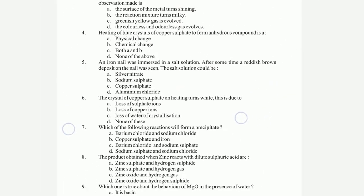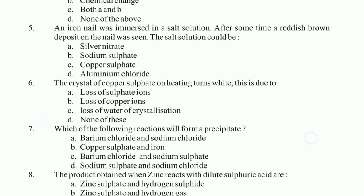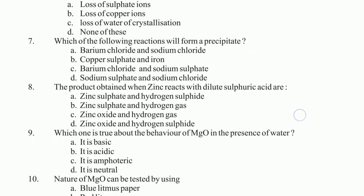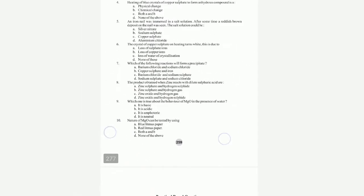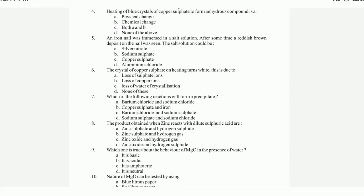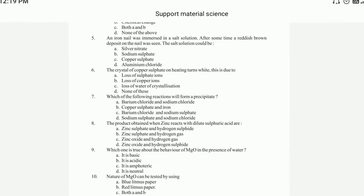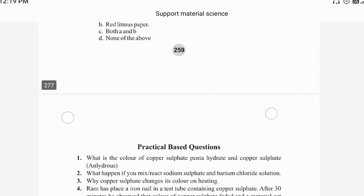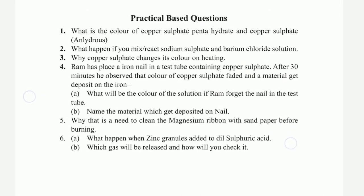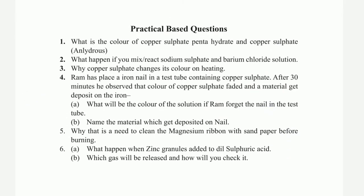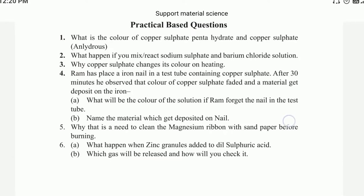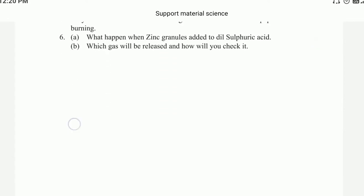More objective questions follow — questions 5 through 10. Then practical-based questions: what is the color of copper pentahydrate and copper sulfate? This is a very important practical-based question. There are 6 questions in total.